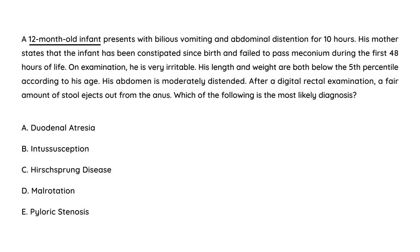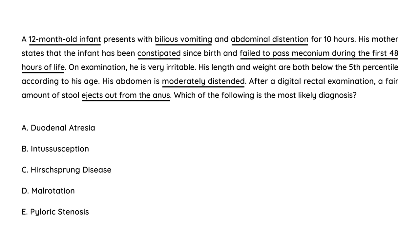Clinical vignette: A 12-month-old infant presents with bilious vomiting and abdominal distension for 10 hours. His mother states the infant has been constipated since birth and failed to pass meconium during the first 48 hours. On exam he is irritable, length and weight are below the fifth percentile, abdomen is moderately distended, and after a digital rectal exam a fair amount of stool ejects from the anus. This is a clear description of Hirschsprung's Disease.